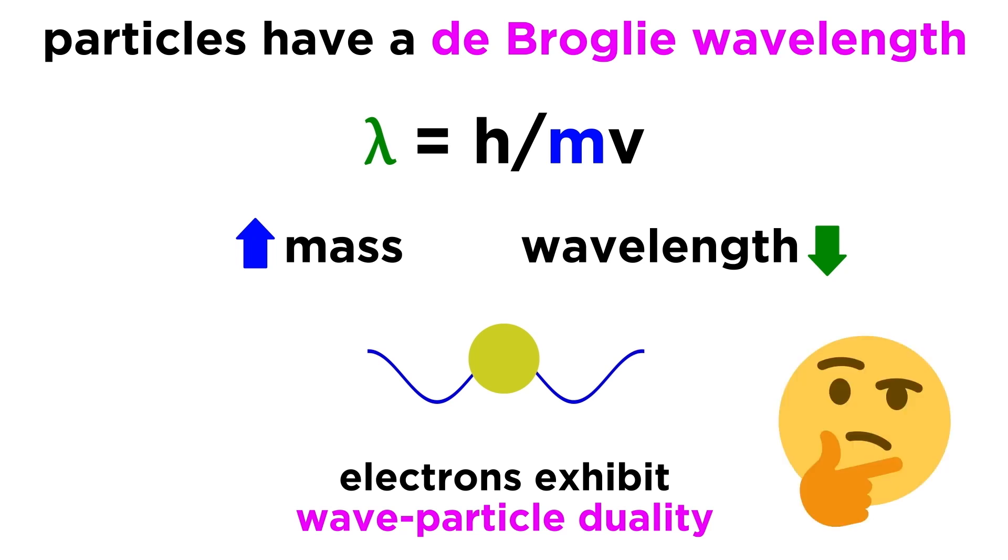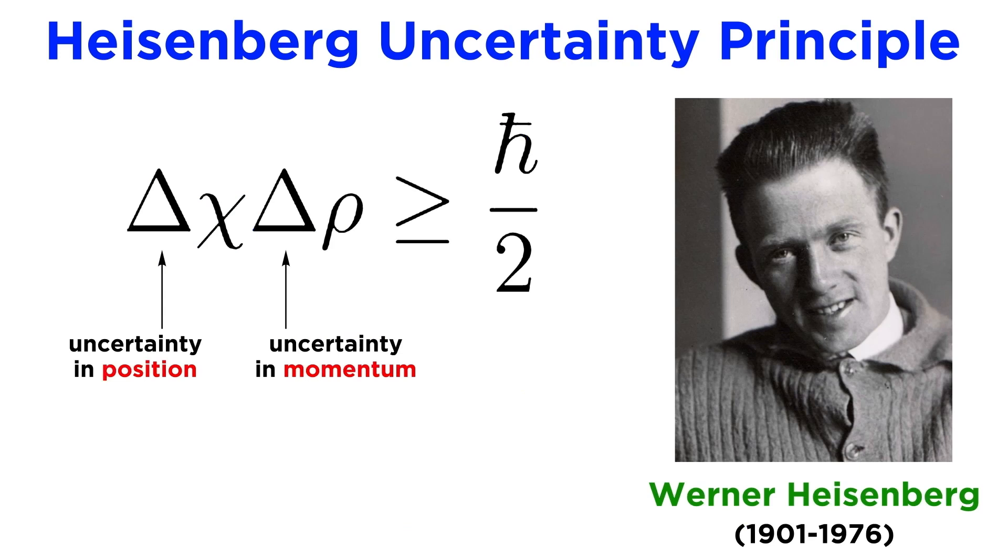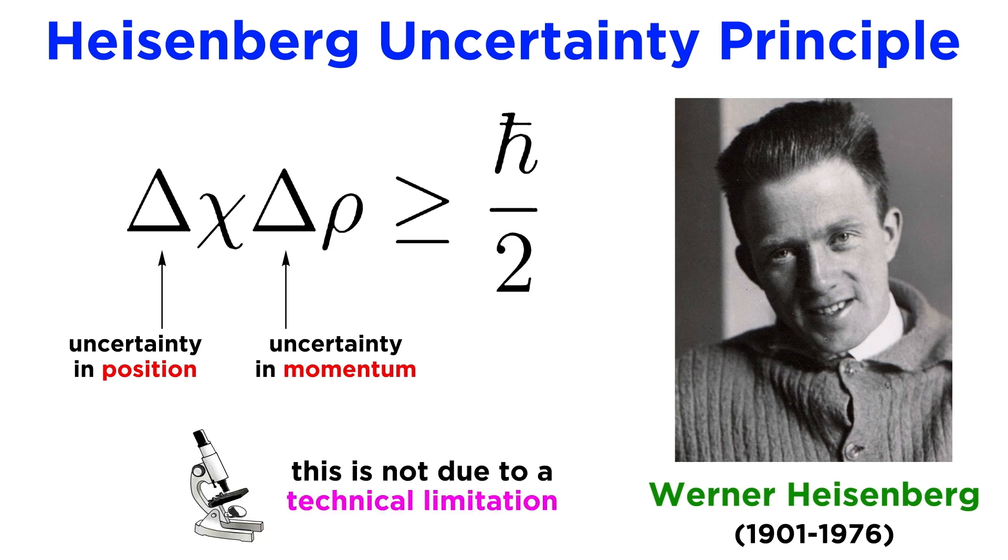As strange as this sounds, electrons were about to become much stranger still. A physicist named Werner Heisenberg realized that there are limits to how accurately we can simultaneously measure both the position and the momentum of a particle like an electron. The more we try to know about its location, the less we can know about its momentum, and the more we know about its momentum, the less we can know about where it's located. This has nothing to do with the sophistication of our instruments, it is a fundamental quality of matter.